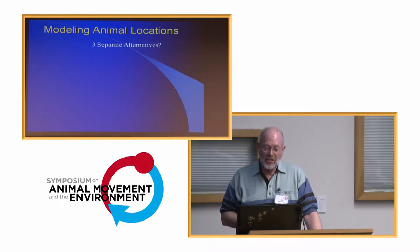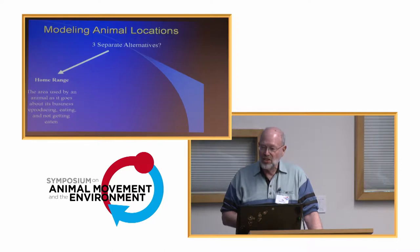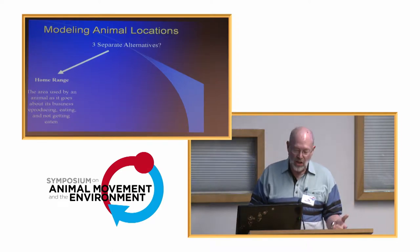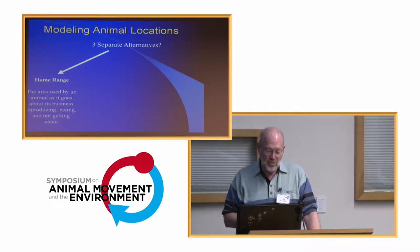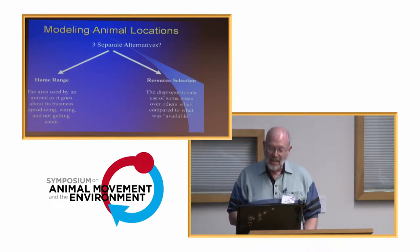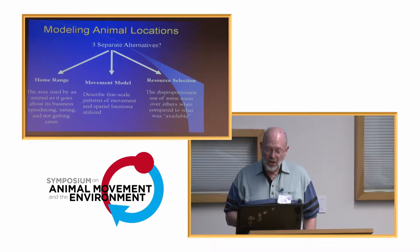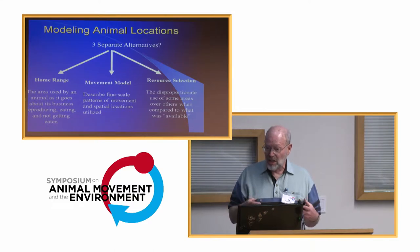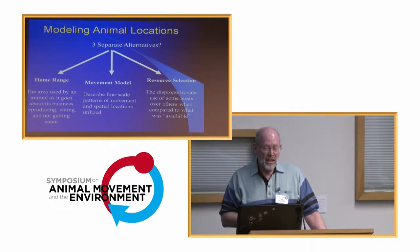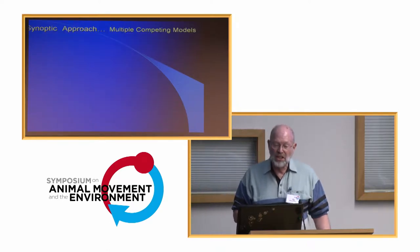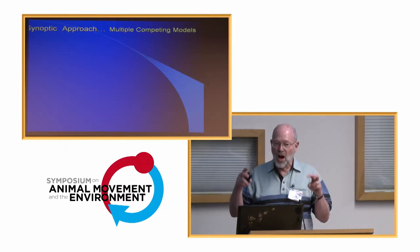How have we done that in the past? Modeling animal locations has really consisted of three alternatives. One is to estimate a home range — the area used by an animal as it goes about reproducing, eating, and not getting eaten. Or we do an analysis of resource selection — estimating the disproportionate use of some areas over others compared to what was available. A third alternative is called a movement model, describing fine-scale patterns of movement on spatial locations. What I'm proposing integrates those things together into one synoptic approach.